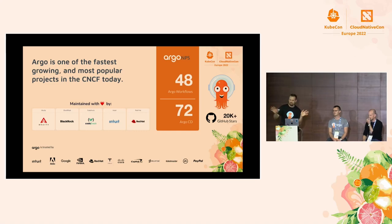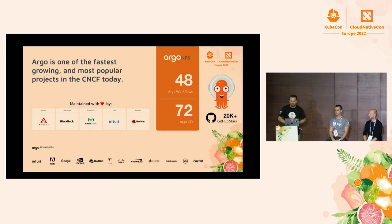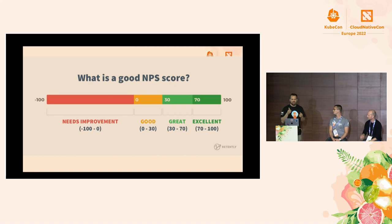A score of 72 is the level of some of the most beloved companies in the world. 48 is very, very strong — like Starbucks is a 48. It's maintained in a partnership between Acuity, BlackRock, Codefresh, Intuit, Red Hat, and of course an amazing community of individual contributors. It's used by Google, Adobe, Nvidia, Tesla, PayPal, EA — the list goes on. Anything above 70 is considered excellent, and anything above 30 is considered great.